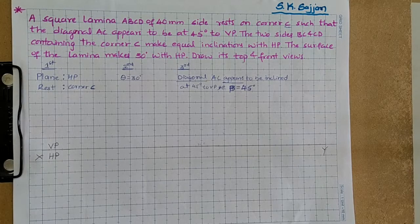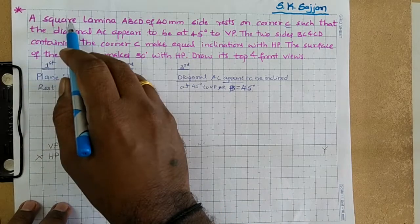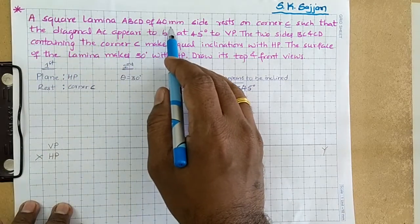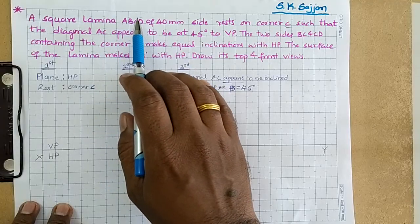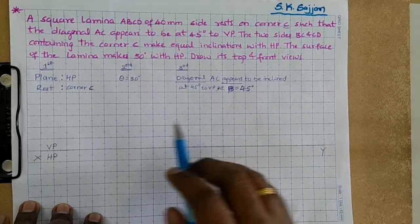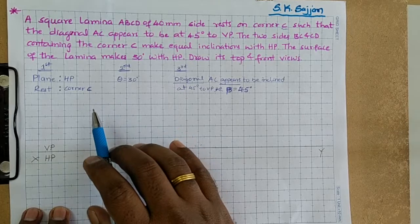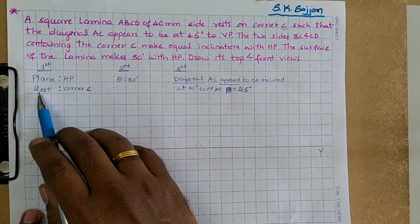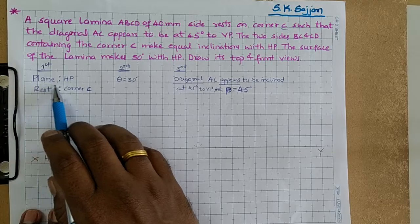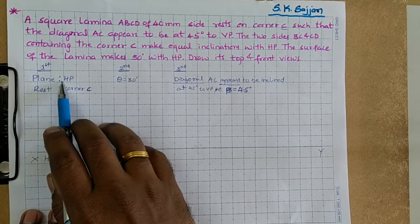Let's start to find out the details of the first, second, and third portions in the given problem. First, we know the given lamina is a square lamina of side 40mm. The name of the lamina is ABCD. For the first portion, we need to identify the projection plane and how the lamina rests on that plane.